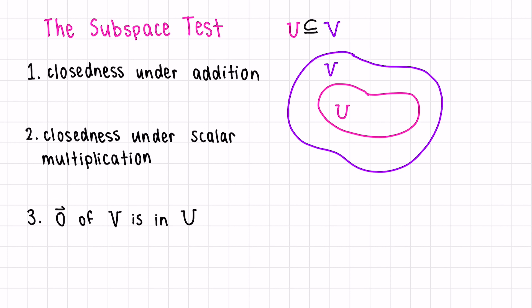Firstly, closeness under addition. Let's say that U1 and U2 are two vectors in our subset U. Then if we add them together, we get another vector in U.